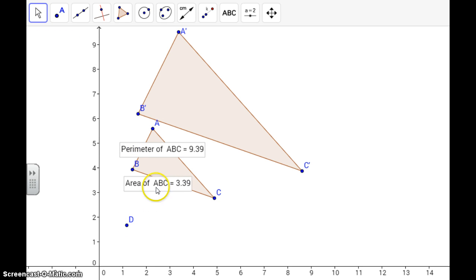We have our center of dilation, pre-image, image, and area and perimeter of our pre-image. All right, that's it.